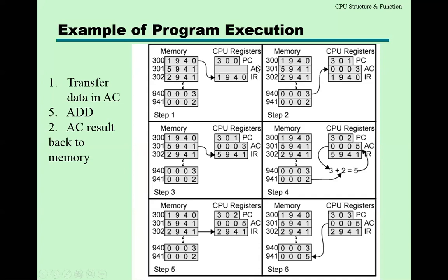At location 301, the next instruction is 5941. This instruction is loaded into the IR instruction register. In step three, you can see 5941 loaded into the IR. In execution, the opcode 5 means addition. So at location 941, whatever data is there, that data will be added with the accumulator. The addition is done and the accumulator value is updated.